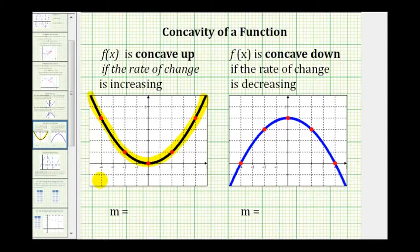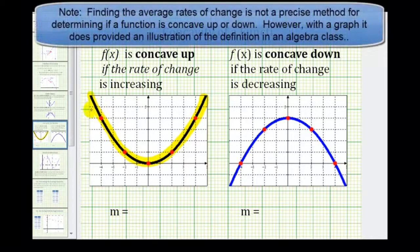Now because this is an algebra class, we can still find the average rate of change of a function by determining the slope through two points. So for example, if we found the slope through these two points, and then these two points, and then these two points,